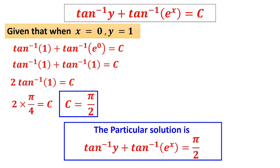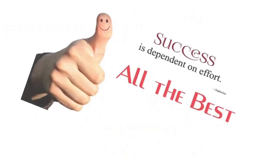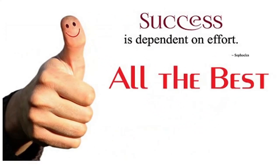To summarize: we integrate to find a solution. If the solution contains plus c, it is a general solution. If boundary values are given (e.g., when x = 0, y is given), we evaluate c and express the final answer — that is called a particular solution. All the best and thank you.